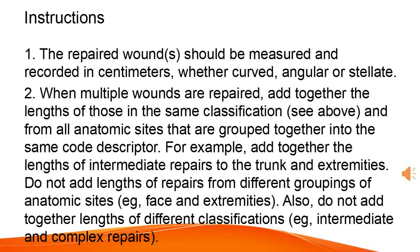Instructions: 1. The repaired wound(s) should be measured and recorded in centimeters, whether curved, angular, or stellate. 2. When multiple wounds are repaired, add together the lengths of those in the same classification and from all anatomic sites that are grouped together into the same code descriptor. 3. For example, add together the lengths of intermediate repairs to the trunk and extremities. 4. Do not add lengths of repairs from different groupings of anatomic sites, e.g., face and extremities. 5. Also, do not add together lengths of different classifications, e.g., intermediate and complex repairs.